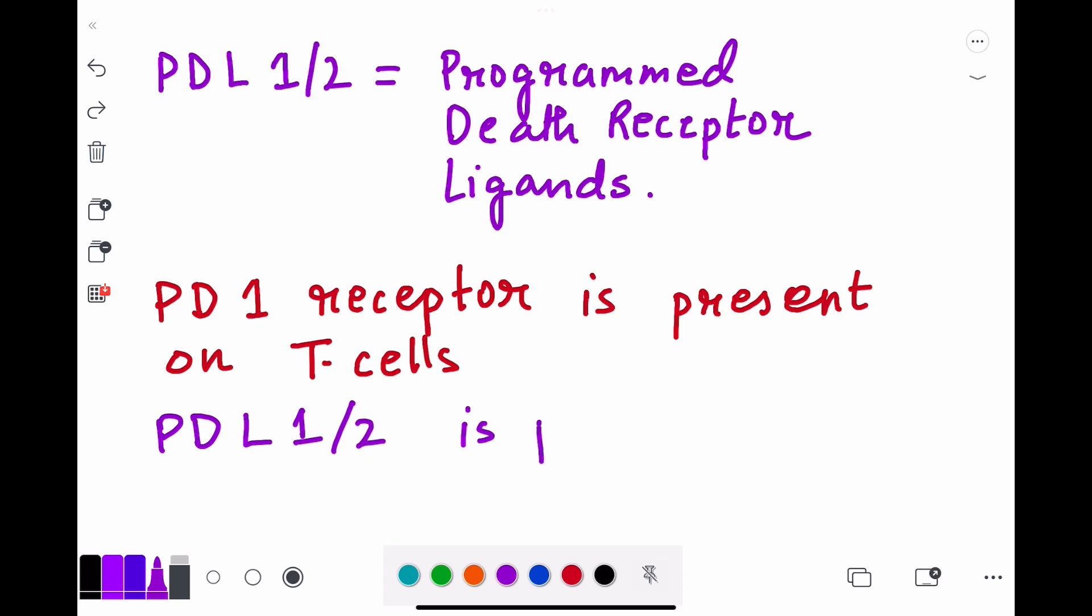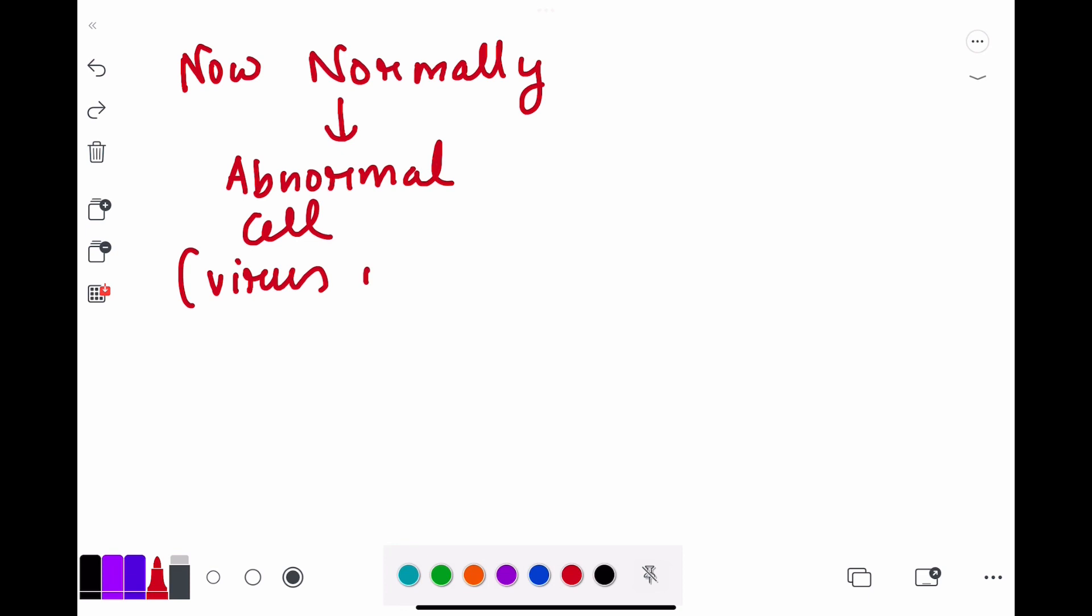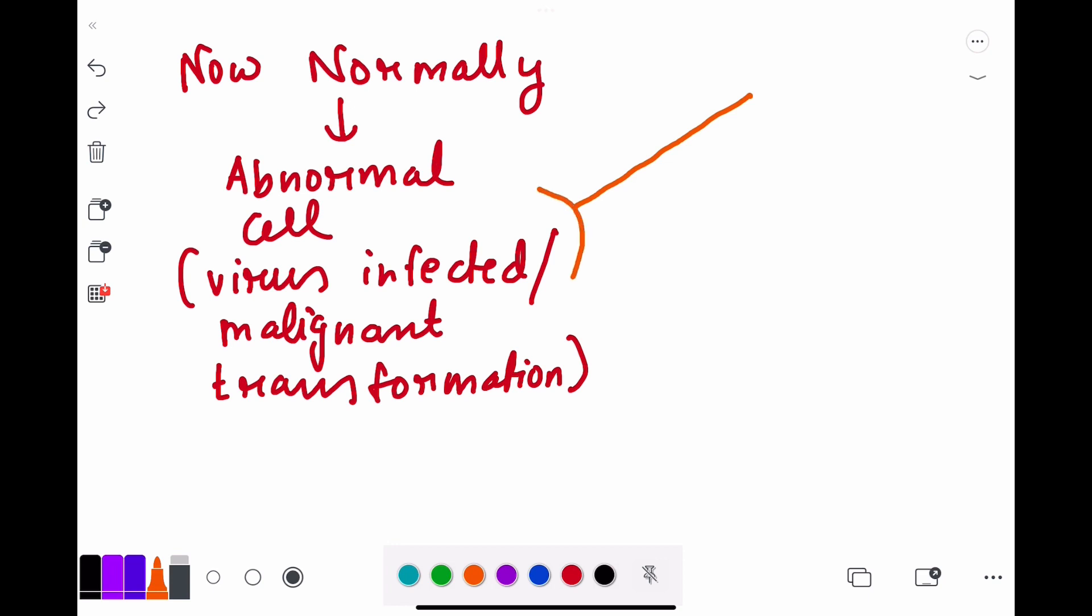So let us see what happens normally. Normally, not all tumors can express this PDL1 or L2. What will happen normally is that if there is an abnormal cell which can be either virus infected or undergoing malignant transformation, it will not be able to express proper antigens on the MHC1. There will be defect in signaling and therefore the cytotoxic CD8 T cell will kill these cells.